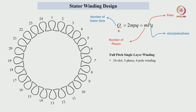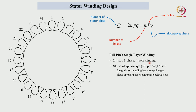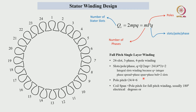The basic equation is: slots = number of phases × number of poles × slots per pole per phase. For our example of 24 slots, 3 phase, 4 pole winding, slots per pole per phase equals 2. Each pole has 6 slots, with 2 slots allocated to each phase. Pole pitch equals 6, and for full pitch winding, coil pitch equals pole pitch, which is 6 slots.